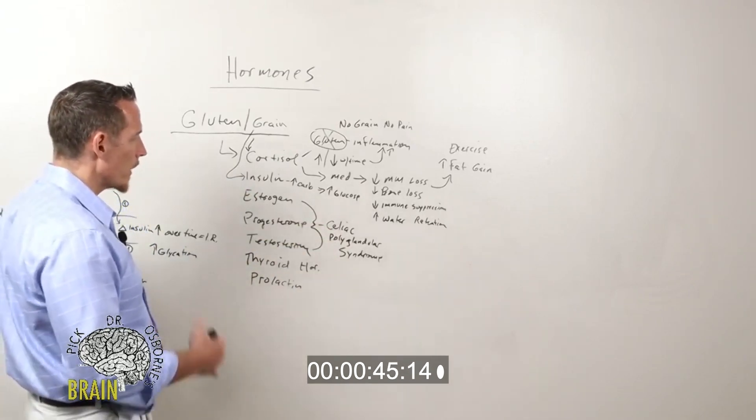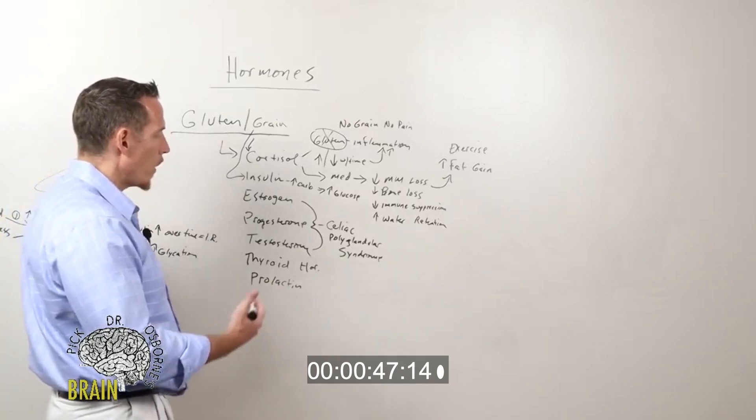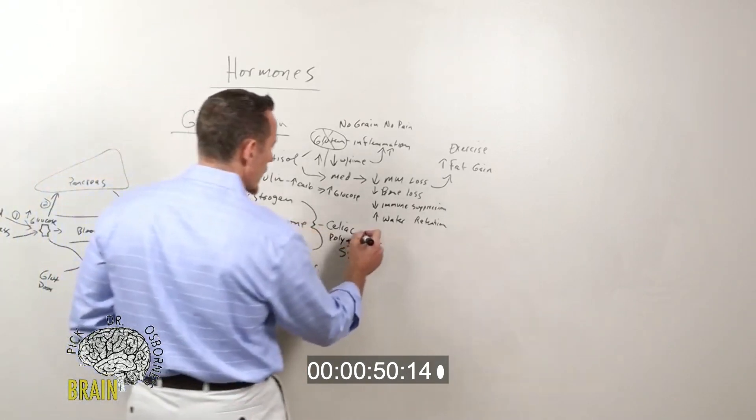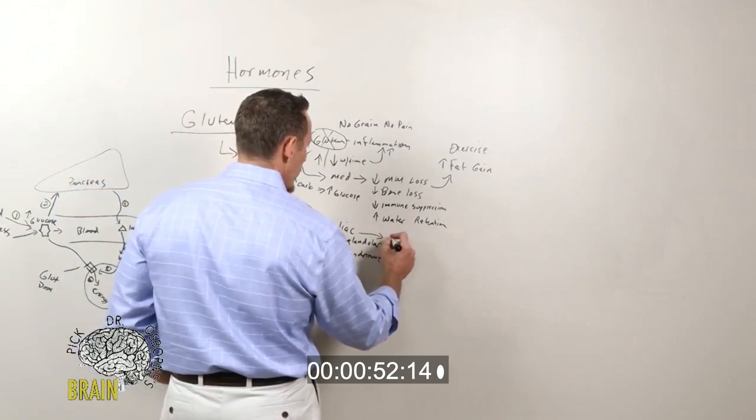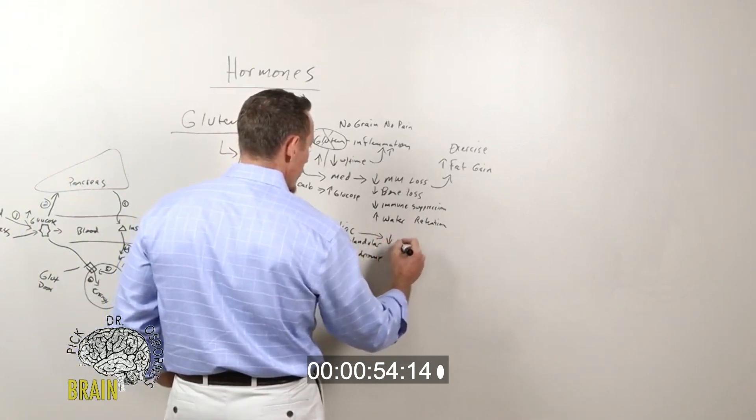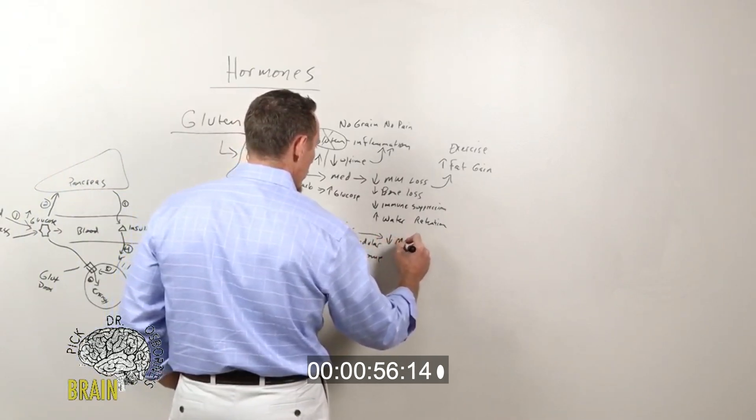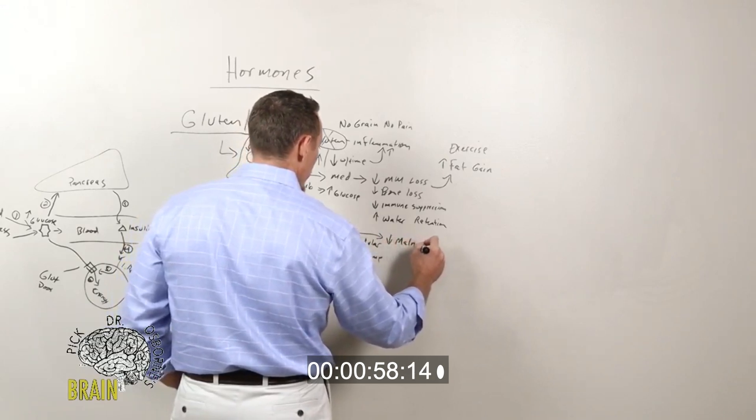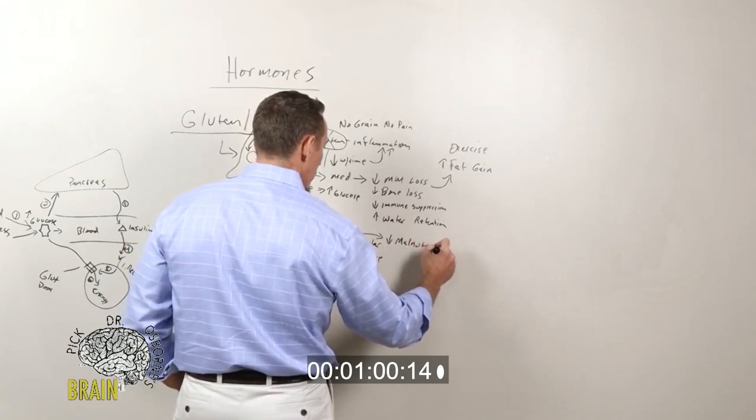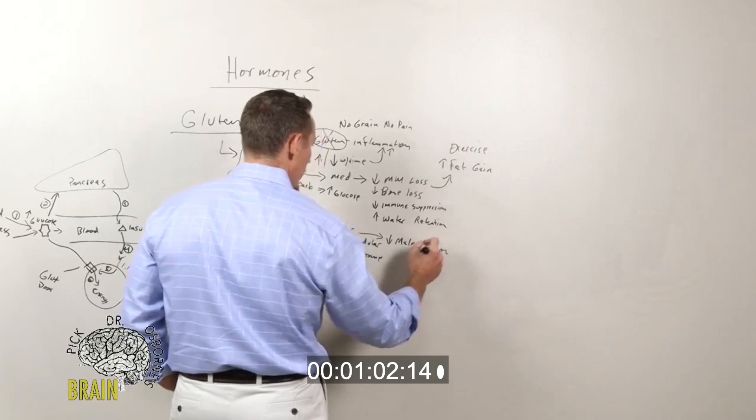Now there's several ways this can happen. One of it is through the celiac leads to reduced digestion and absorption of food, so it leads to major malnutrition. We get deficiencies in vitamins and minerals.